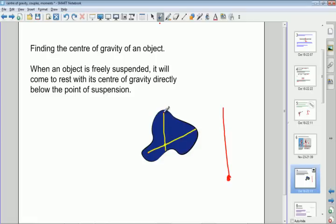Okay, so suspend it from one point, draw a vertical line downwards, suspend it from the other point, draw a vertical line downwards, and the point of intersection is the center of gravity, and that's how you find it. Okay, thanks very much.